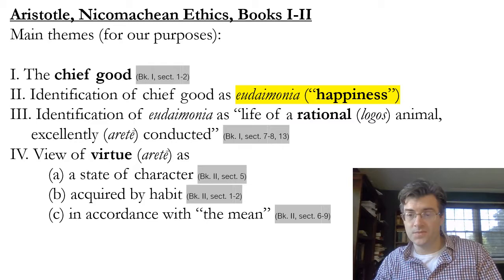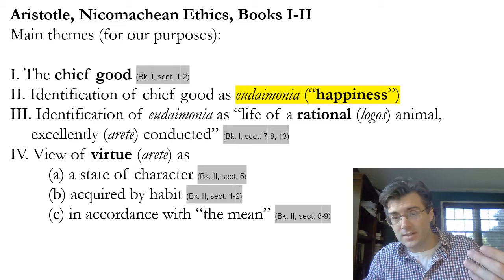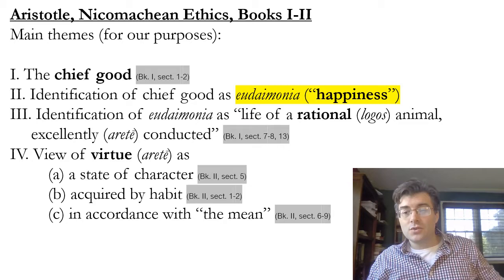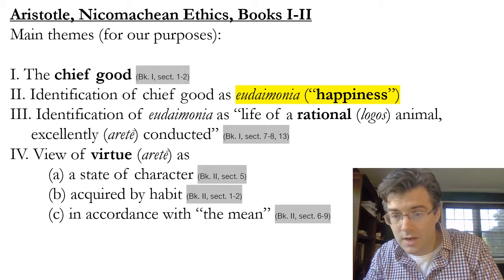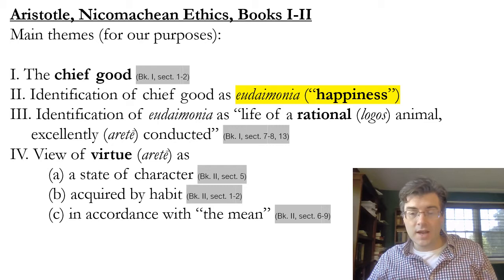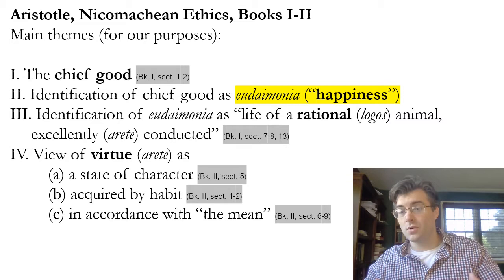We've already covered Aristotle's account of the chief good as the kind of thing that all of our other actions are aiming towards, and we found that he identifies this chief good with happiness. Now I'd like to say more about why he thinks the chief good is happiness, and what he means by it — because he goes on to answer the question of what happiness is. We saw in the last video that he considers common sense answers like happiness is pleasure, health, or honor, and he wants to give a more sophisticated, accurate answer.